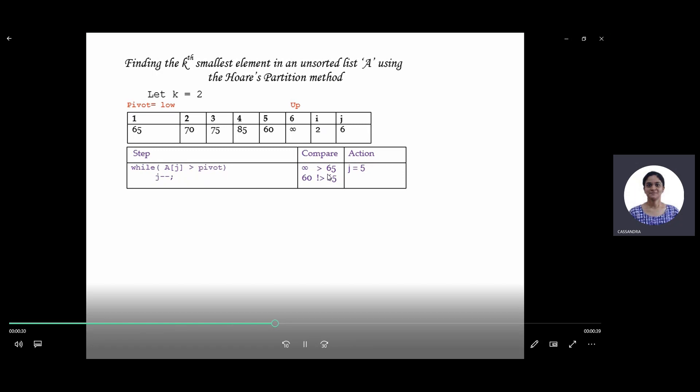Next, we check if the value at j, that is 6, is greater than the pivot. It is, so we decrement j.